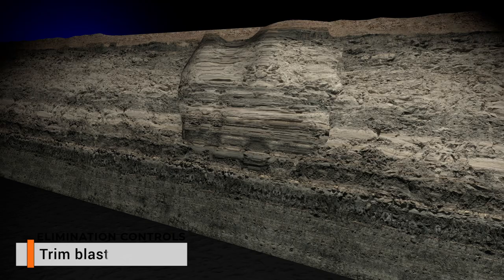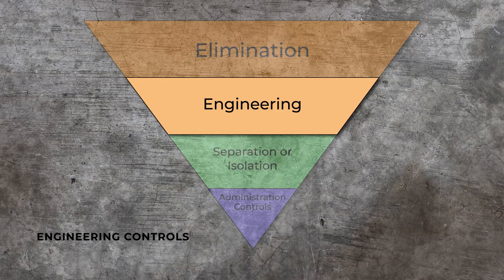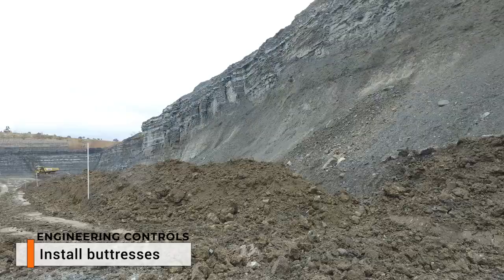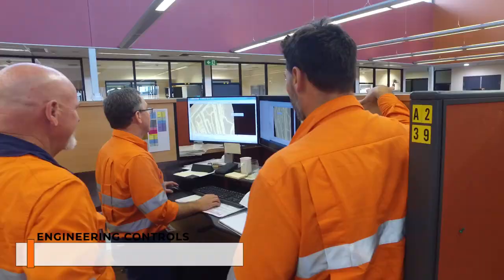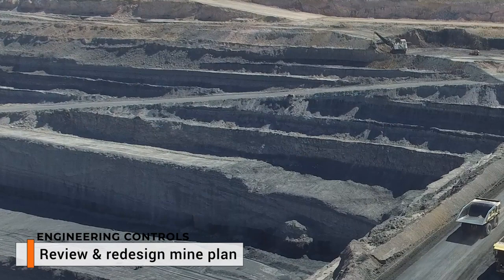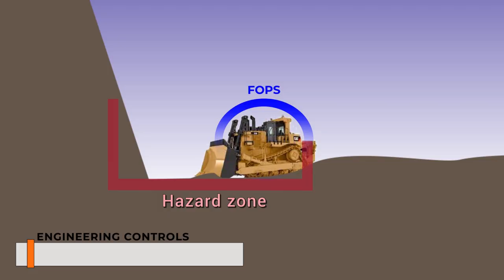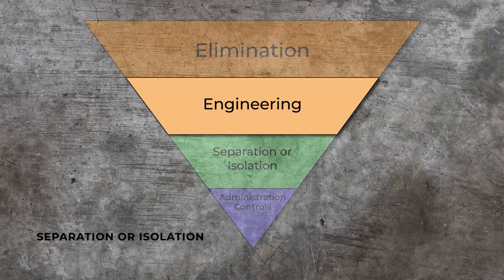Redesign or engineering controls include altering the blast design, such as changing from a hard wall to a soft wall; installing temporary buttresses; reviewing and redesigning the mine plan, such as incorporating additional benches into both excavated and dumped slopes; and only allowing equipment with falling object protection installed to work within the hazard zone.